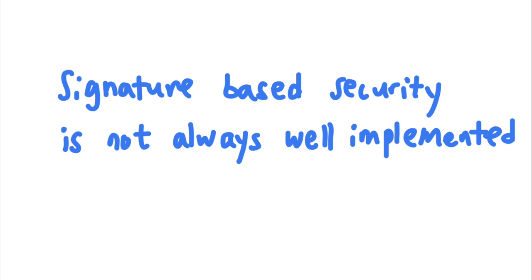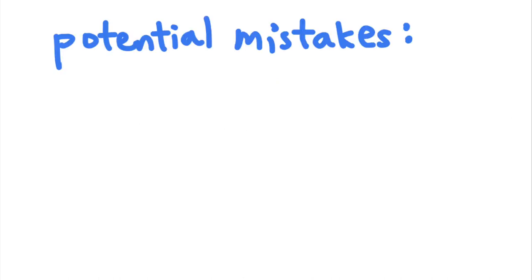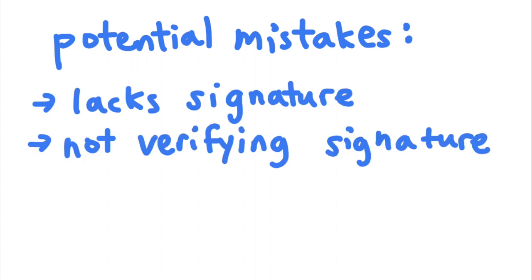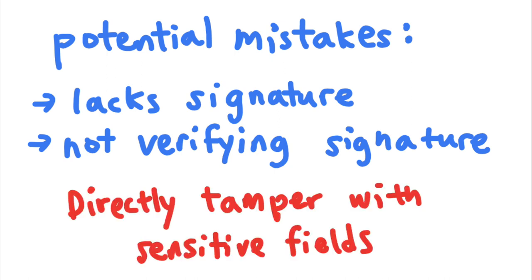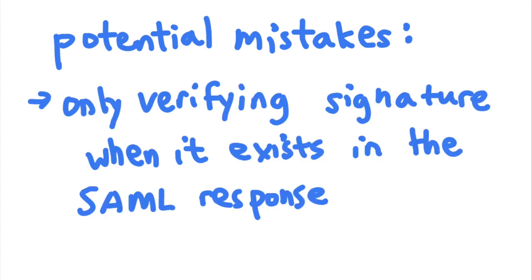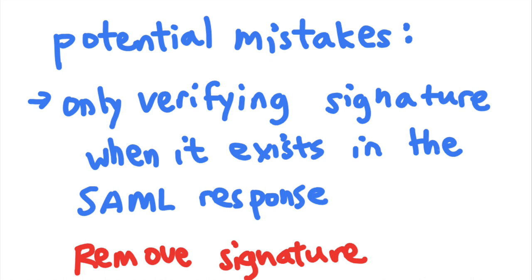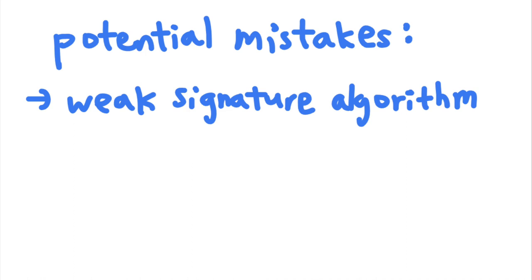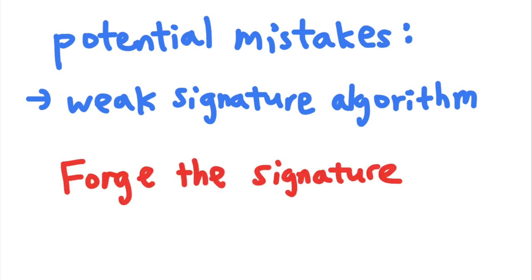But signature-based security is not always well implemented. Sometimes the SAML response lacks a signature, or the signature is not verified at all — in which case the attacker simply needs to tamper with the fields directly. And sometimes developers make the mistake of only verifying the signature when it exists. In that case, the attacker can manually remove the signature value from the SAML response — for example, by emptying out the signature field or removing it entirely. When the SAML signature used by the application is predictable, the attacker can simply recalculate the signature and forge a valid SAML response.